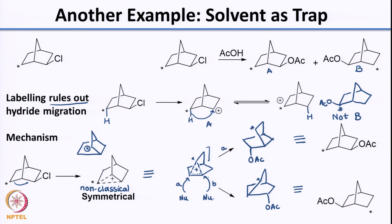This labeling as well as trapping of this non-classical carbocation using solvent is a beautiful way to prove this mechanism. You know that it is not hydride transfer, but here you have used the solvent as a trap to prove the mechanism for this reaction. What is interesting is that the intermediate carbocation is symmetric — it has a mirror plane. Since it is symmetric, the products you get from it would be enantiomers, and that is also seen beautifully in both the products that are obtained.